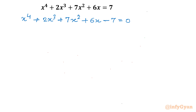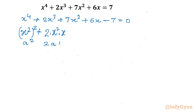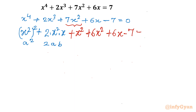Now if you observe, the first term is (x²)². For the second term, we can write 2 times x² times x, which looks like 2ab in a perfect square pattern. So b² = x² is required. That is the reason for splitting 7x² into x² plus 6x², keeping the rest unchanged, equal to 0.